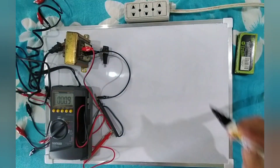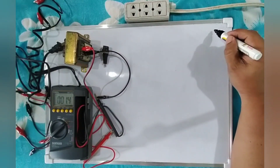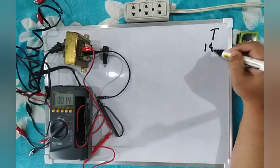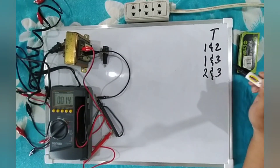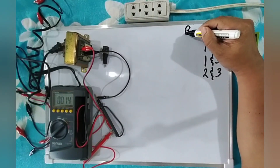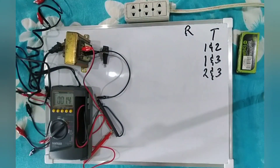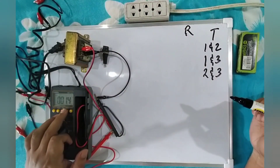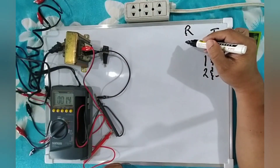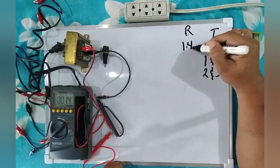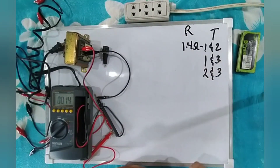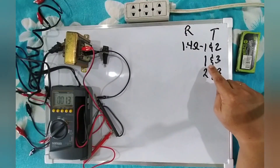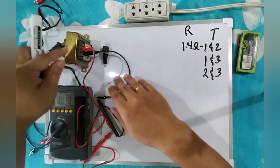Let's write down: terminal one and two, terminal one and three, then terminal two and three. The resistance of terminal one and terminal two is 1.4 ohms. Next, we're going to measure the resistance of terminal one and terminal three, so I'm going to place the alligator clip on terminal three.